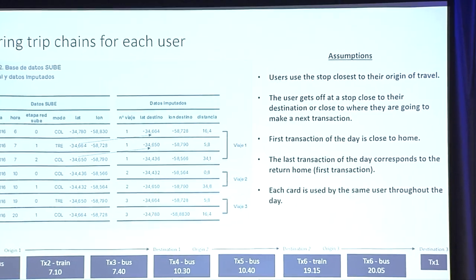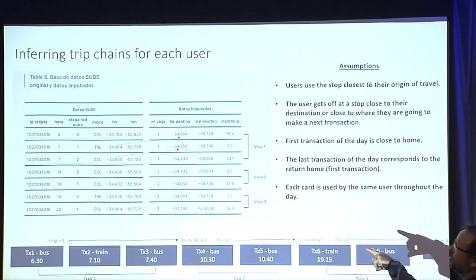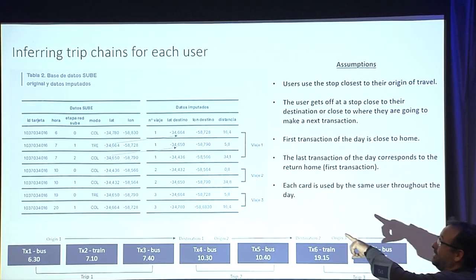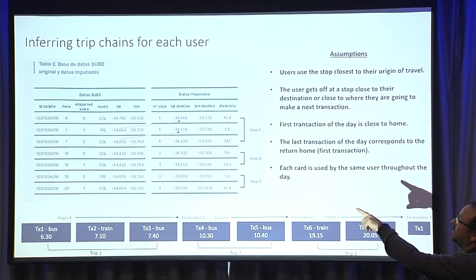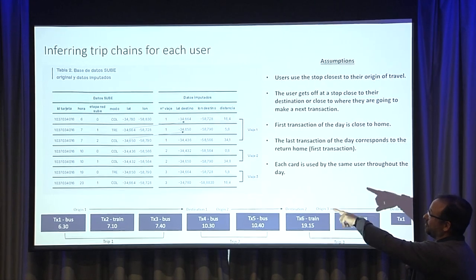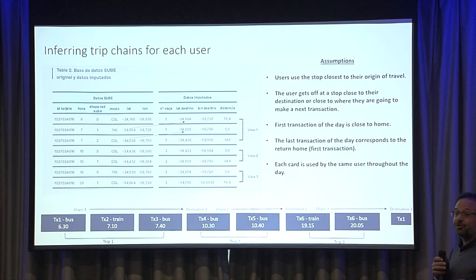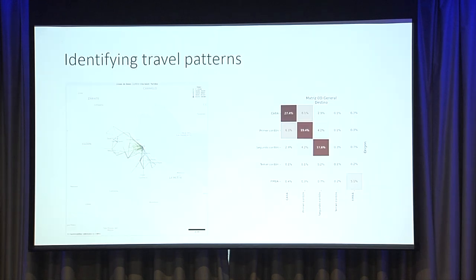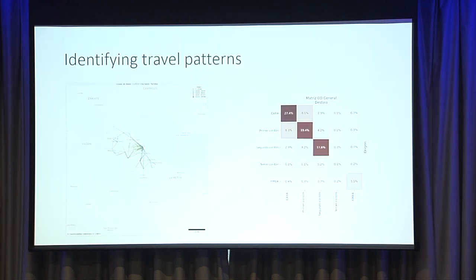Another thing you have to do is understand whether the trip is a standalone trip or a leg of a trip — basically if you are doing a transfer. For doing this, we use a window of time using the timestamp. In particular cases, you can see you have three transactions but it's only one trip. The origin is the latitude and longitude of the first transaction, and the destination is the latitude and longitude of the fourth transaction. We assume the last trip of the day goes back to the first trip, which is presumably home. The assumptions are discussed in the literature.